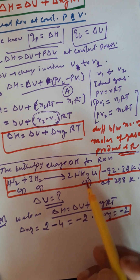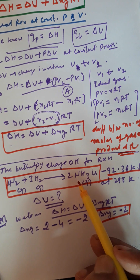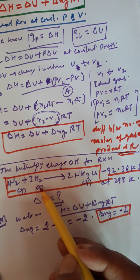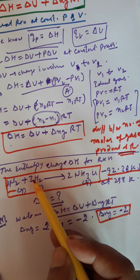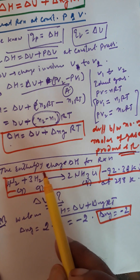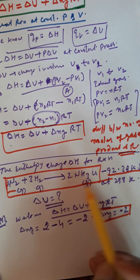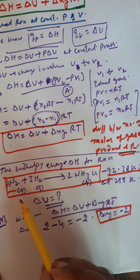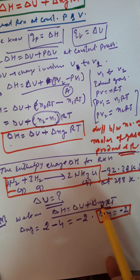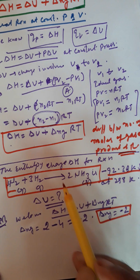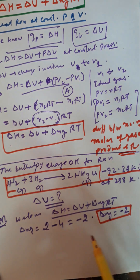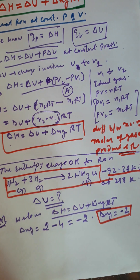ΔNg कैसे निकालना है — product side में, लेकिन ध्यान रखना सिर्फ gaseous state हो। मान लो यहाँ पर solid होता तो उसके moles हमने count बिल्कुल भी नहीं करने थे। हमने सिर्फ जिनके नीचे (g) gaseous लिखा हुआ है उन्हीं के number of moles ΔNg में लेने हैं। क्योंकि ΔNg में G मतलब gaseous state है। तो: product 2 - reactant 4 = -2।